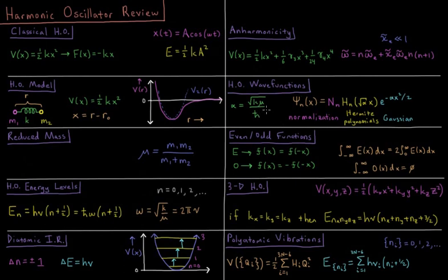The wave functions of the harmonic oscillator include a normalization constant, a polynomial set called the Hermite polynomials, and a Gaussian function e to the minus alpha x squared over two. The value of this exponent and the value inside the Hermite polynomials here is alpha, which is the square root of the spring constant times the reduced mass divided by Planck's constant over two pi.